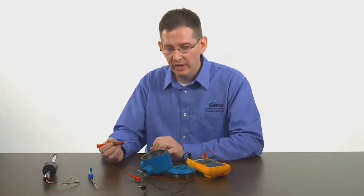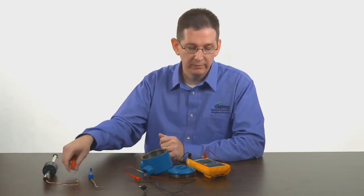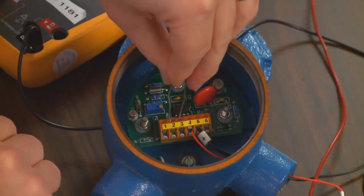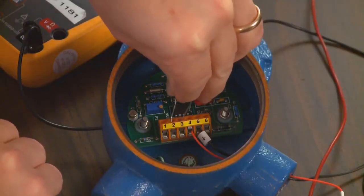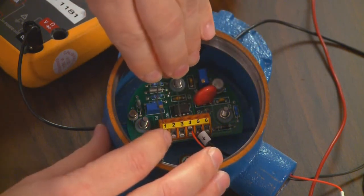If you do not have a potentiometer handy, you can replace that by using a simple jumper wire, placing it from terminals 2 and 3 to set your 4 milliamp point and 1 and 3 to set your 20 milliamp point.